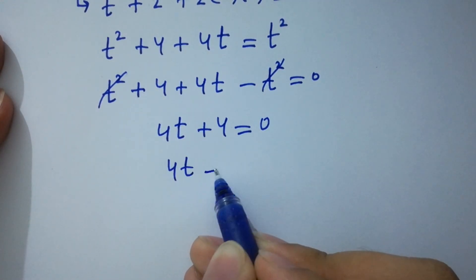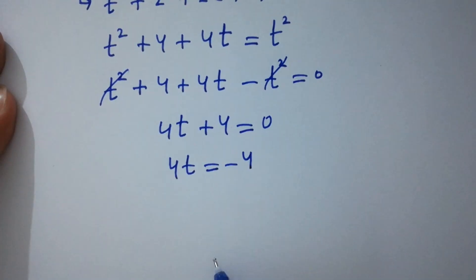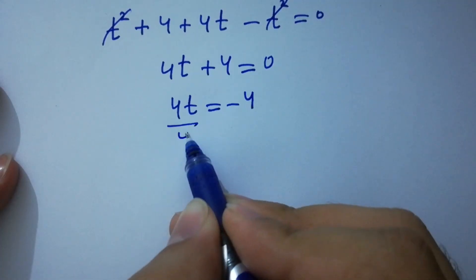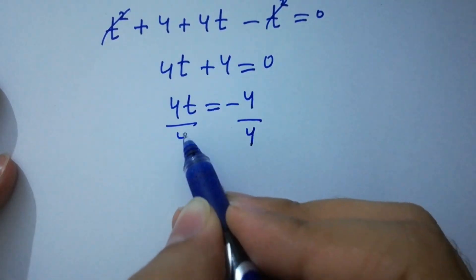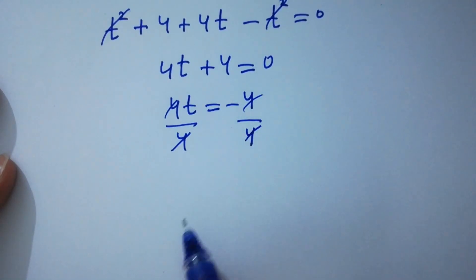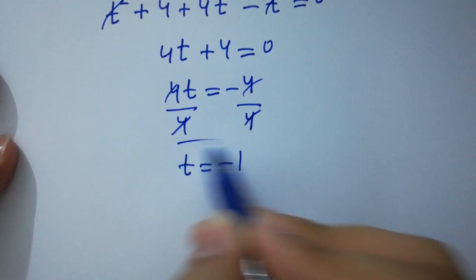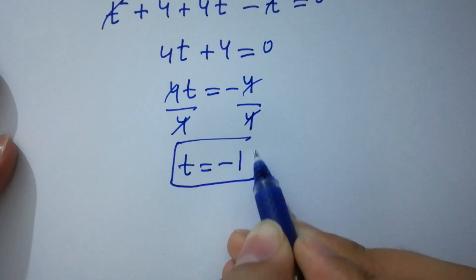4t equals minus 4. Divide by 4 on both sides, 4 and 4 cancels. We get t equals minus 1, which is the value of t.